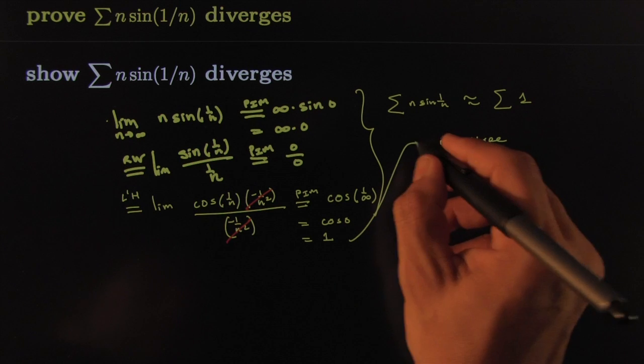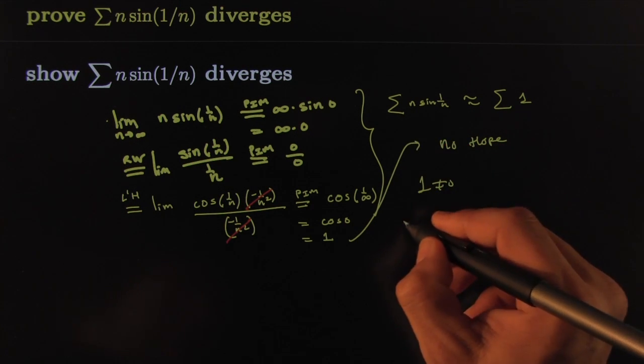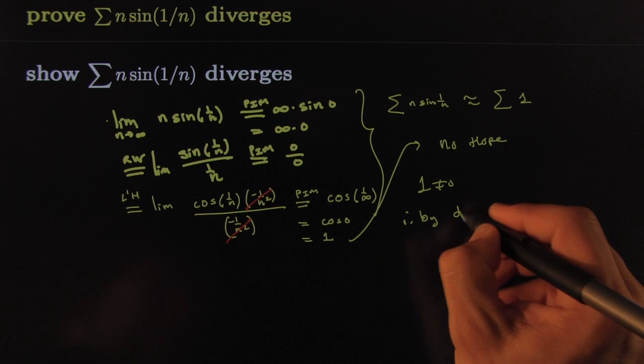You could stop right here and say, 'No hope, one is not equal to zero,' therefore by the divergence test